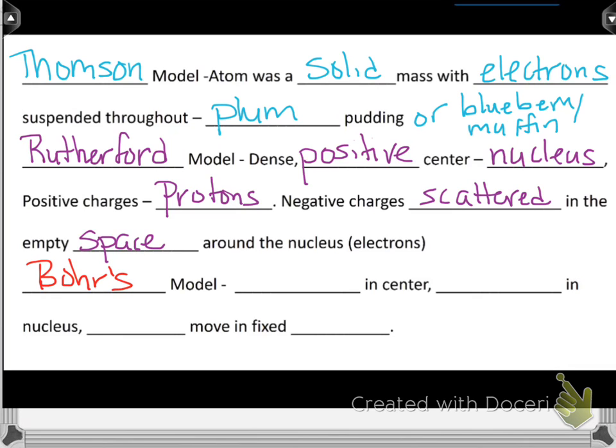And then finally, we have Bohr's model. And this is the one we use mostly still today. I'm going to talk to you about one other one. But this is the one we use because it's easier for us to understand because it's flat and it's not three-dimensional like what we know them to be now. But Bohr's model says the nucleus is in the center. There's protons in the nucleus. And the electrons moved in a fixed orbit.